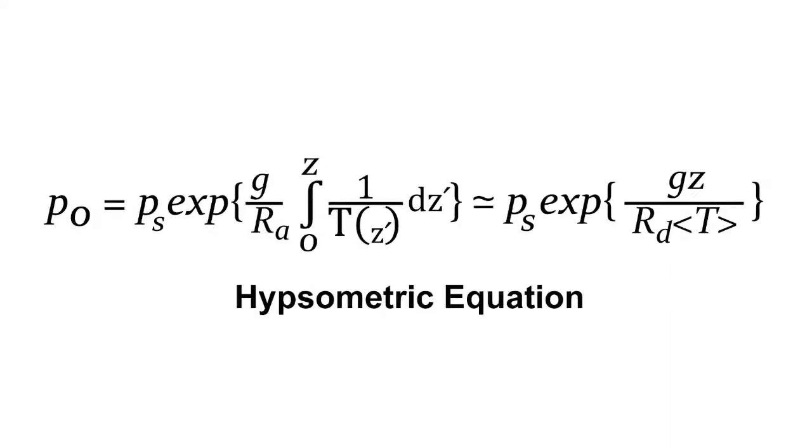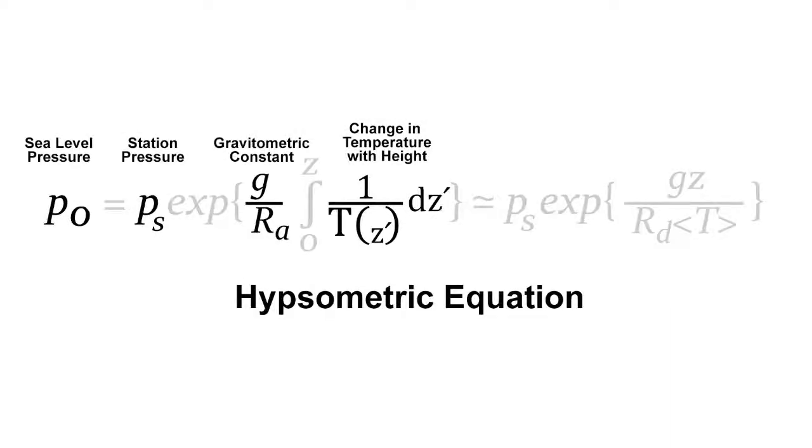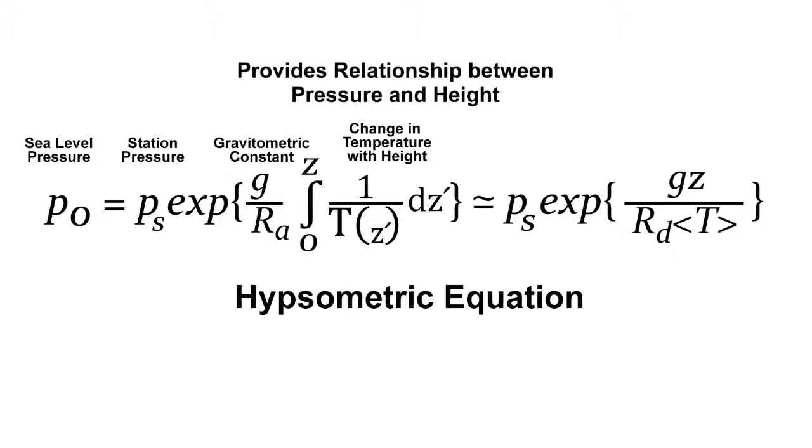And then you can use the hydrostatic equation to get a new equation, which we call the hypsometric equation. The hypsometric equation is basically derived from the hydrostatic equation. And that allows us to calculate a height from a pressure and temperature measurement. Or it also allows us to calculate a pressure from a height and a temperature measurement, always assuming that we know the density of our gas.